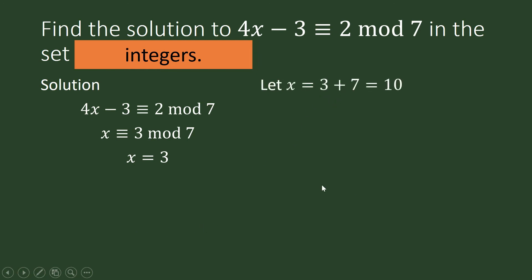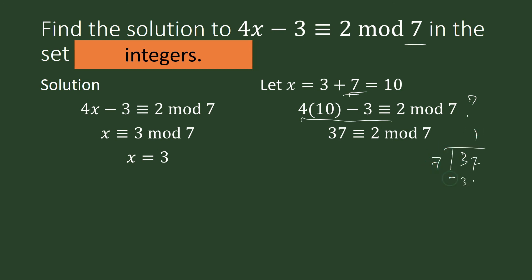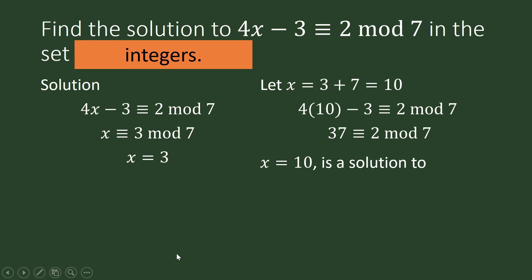We will add 7 to 3. The 7 here has something to do with your modulo. So 3 plus 7 is 10. Is 10 a solution to our congruence equation? Well, 4 times 10 is 40, minus 3 — is this congruent to 2 modulo 7? This equals 37. When you divide 37 by 7, the remainder is 2. So yes, 37 is congruent to 2 modulo 7, and so 10 is also a solution. We obtained 10 from 3 by adding 7.